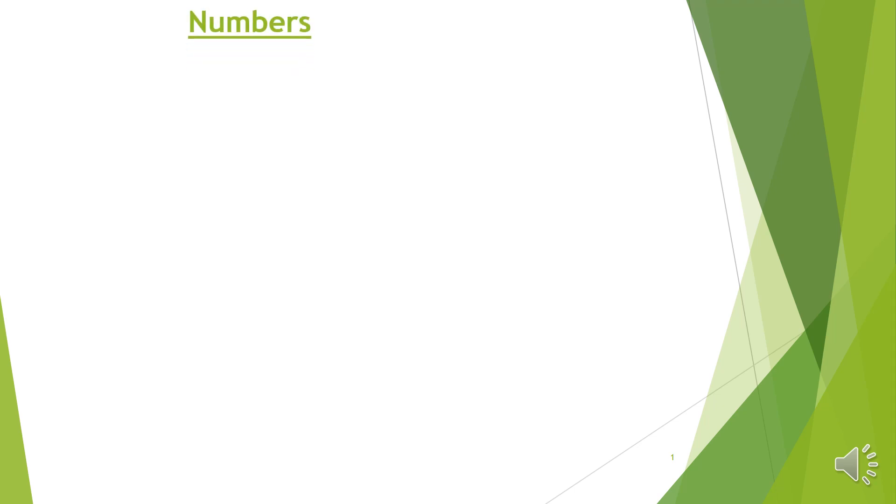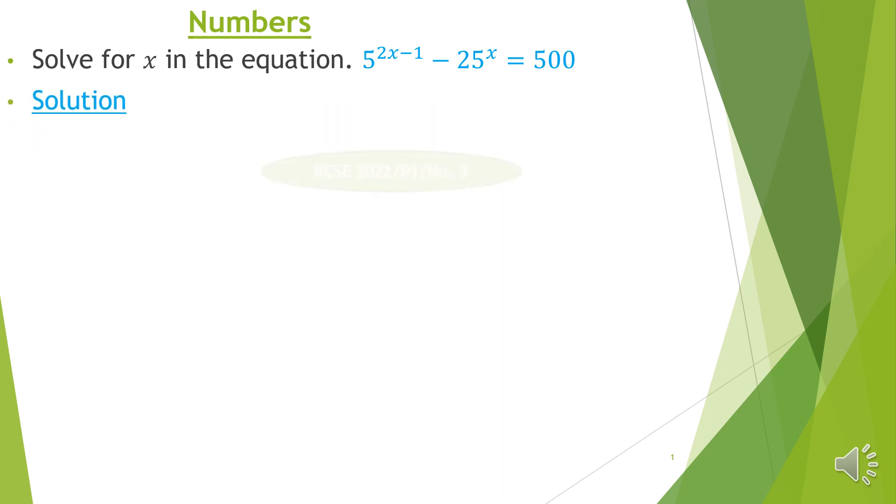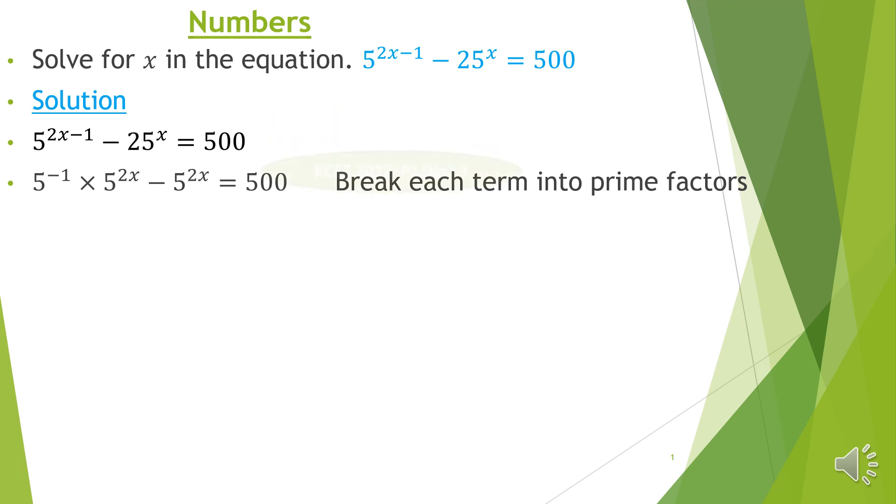So the question goes: solve for x in the equation 5 raised to 2x minus 1 minus 25 raised to x equals 500. On a quick note, I'm providing the solution which goes that the first step for that equation 5 raised to 2x minus 1 minus 25 raised to x equals 500. So first we break each term into the prime factors.